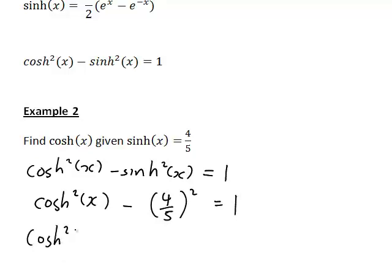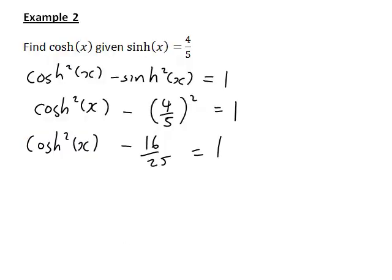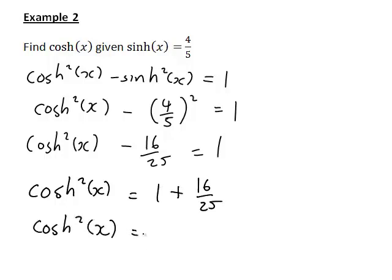That's going to become cosh squared x minus 16 divided by 25 equals 1. So cosh squared x equals 1 plus 16 divided by 25, giving cosh squared x equals 25 over 25 plus 16 on 25, which becomes 41 on 25.